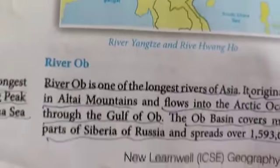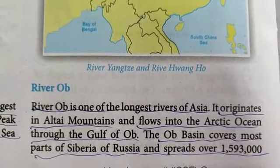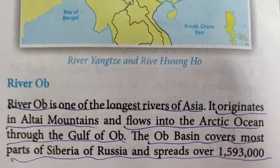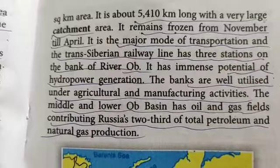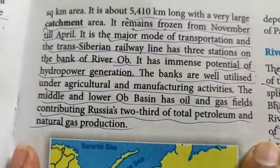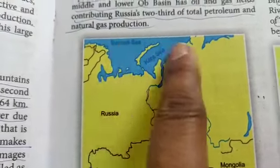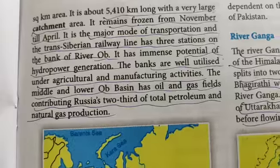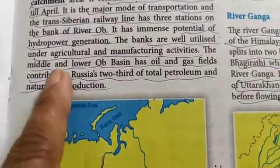Coming to River Ob, one of the longest rivers of Asia. It originates in the Altai Mountains and flows into the Arctic Ocean through the Gulf of Ob. The Ob basin covers most parts of Siberia in Russia and spreads over 1,593,000 square kilometers. It is about 5,410 kilometers long with a very large catchment area. It remains frozen from November till April — we are talking about Siberia, the northernmost part of Russia, near the North Pole. It is the major mode of transportation, and the Trans-Siberian Railway Line has three stations on the bank of River Ob.